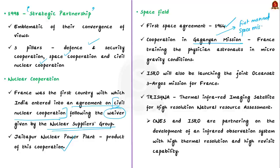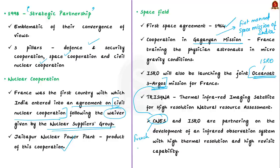ISRO will also be launching a joint mission called Oceansat-3 Argos mission. Oceansat-3 is the third flight unit of ISRO's Oceansat program, with a main mission of ocean observation, serving marine biology and ocean monitoring applications. Argos is an initiative of the French Space Agency along with the US National Oceanic and Atmospheric Administration — the only global satellite-based data collection and location system dedicated to studying and preserving the environment. India's ISRO joined this program in 2007, and the first fourth-generation Argos-4 instrument is set to fly with India's Oceansat-3 satellite.